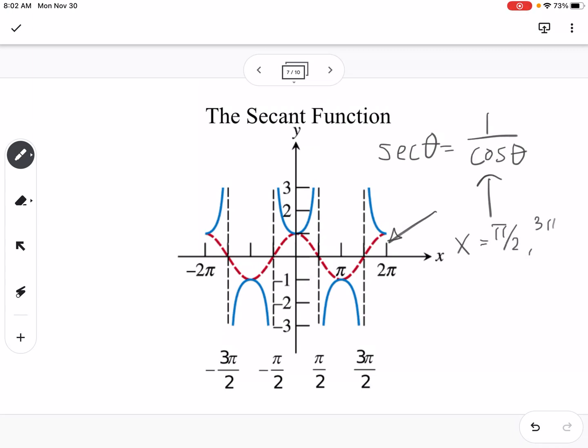So cosine equals 0 at pi over 2, 3 pi over 2, negative pi over 2, and we can keep going in either direction. So that's where our asymptotes are located here, and then again, secant graph just comes off of the local minimum or maximum of that cosine graph.